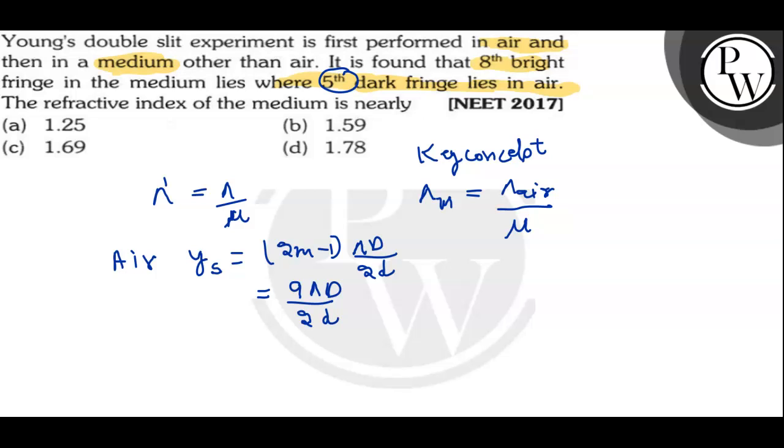Okay, now what are they saying? 8th bright fringe. Now, for bright medium, bright के लिए हमारे पास Y की value क्या होगी? Y dash is equal to, bright के लिए formula हमारे पास क्या रहता है? N lambda D upon 2D. Here, what is N?